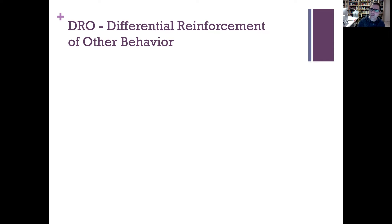Instead of delivering the reinforcer contingent upon problem behavior — which was happening in the natural environment — we reserve the reinforcer to be delivered contingent upon an appropriate behavior. That could be in the form of a communication attempt; we call that functional communication training. If the behavior you're reinforcing is incompatible with the problem behavior, we refer to this as DRI, or differential reinforcement of incompatible behavior.